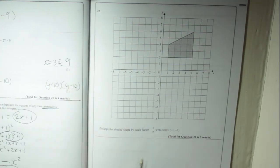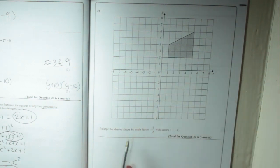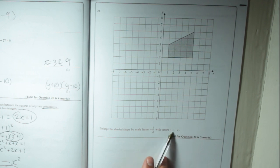Okay, so question 22. This is an enlargement question. Enlarge the shaded shape, there it is, by scale factor minus a half with centre minus 1 minus 2.